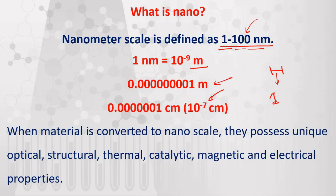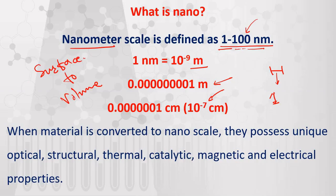When you convert a material to nanometer scale, its properties will change. If you consider the bulk molecule, then the bulk molecule behaves differently compared to the nanometer-scale particle. After converting to nanometer scale, the surface-to-volume ratio — a very important property — will change. As a result, optical properties, thermal properties, structural properties, catalytic properties, and electrical properties all change on a large scale.